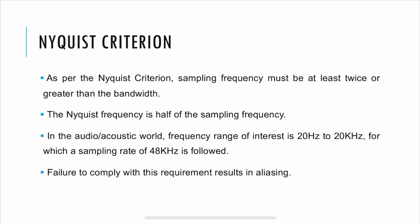In the audio acoustic world, we are interested in the frequency range of 20 Hz to 20 kHz because that's the human audible range. And for that, a sampling rate of 48 kHz is followed. Now it's not exactly twice, it's greater than twice. That's because of the filter attenuation, which we will look at in the end. Now failure to comply with this requirement results in aliasing. So if you want to capture within this 20 to 20 kHz, you must follow a 48 kHz sampling rate or higher. If you do not, you're going to end up with aliasing.